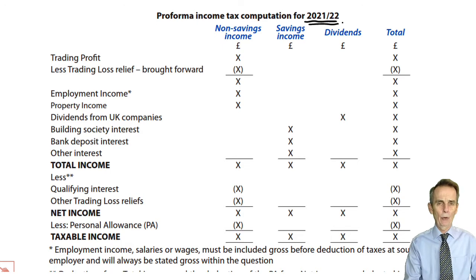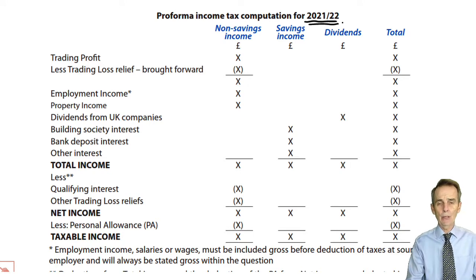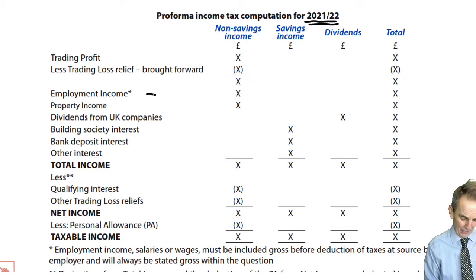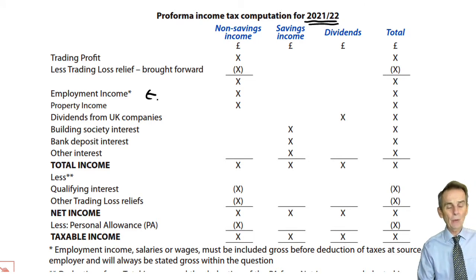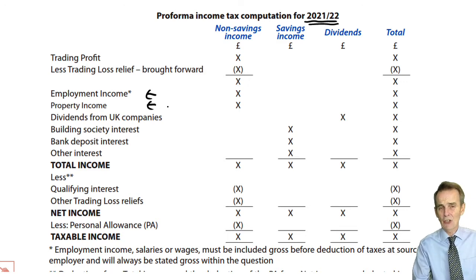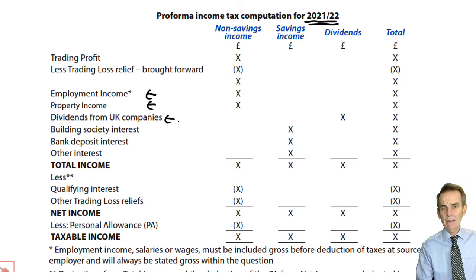There are one or two problems in terms of employment income, but otherwise it's not going to be difficult to establish what was actually received between the 6th of April 2021 and the 5th of April 2022. We had a received basis in relation to employment income, detailed in chapter 9, and property income in chapter 3. We also had dividends — again, a received basis.